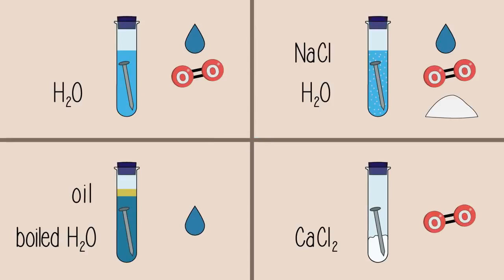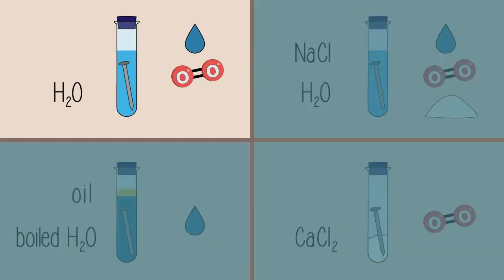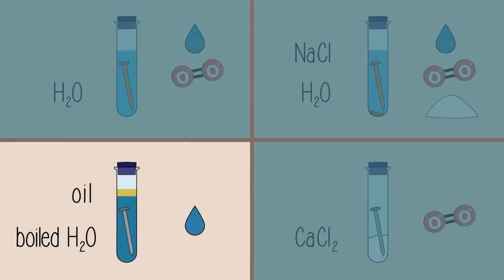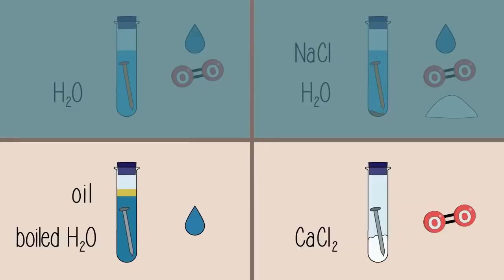Stopper all four test tubes with a rubber bung and let stand for a couple of days. You will find that the nails in the first and second test tubes have rusted. In fact, you may see a reddish-brown precipitate at the bottom of these tubes. The nails in the third and fourth test tubes have not rusted.